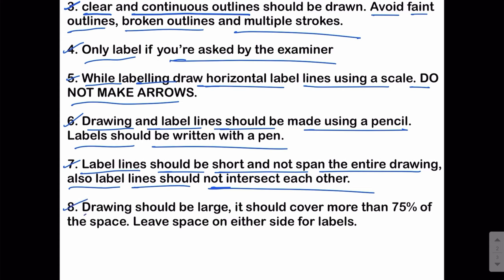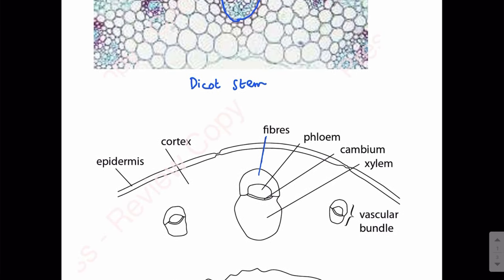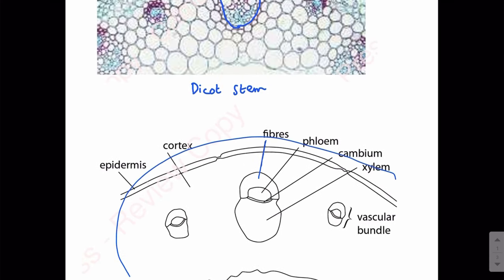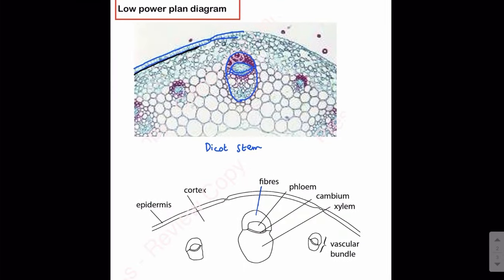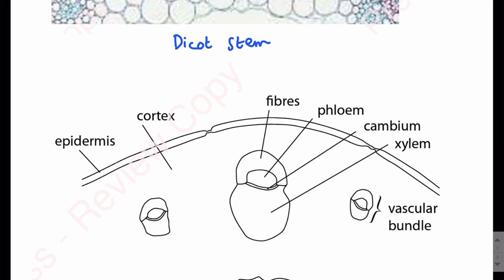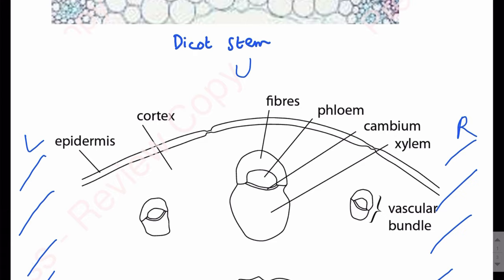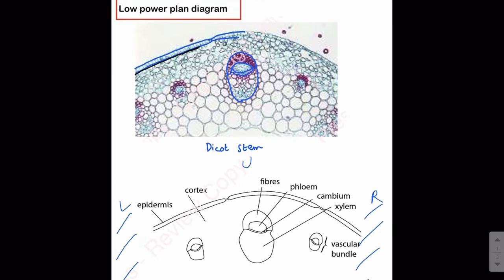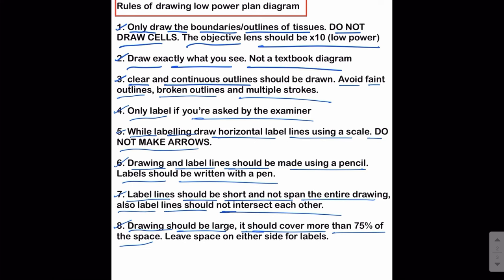Point number eight: the drawing should be large and cover most of the space — more than 70 percent. Leave space on either side for the labels. Your drawing should cover more than 75 percent of the space. Keep some space on the right, left, top, and bottom so that you can label. These are the rules, tips, and tricks you need to follow while drawing the low-power plan diagram. Thank you so much for watching.